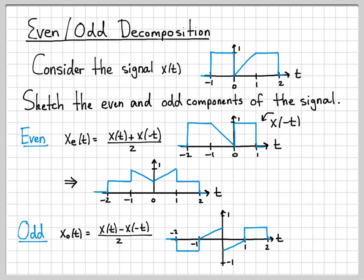And that's just the kind of general strategy you follow for doing these types of problems. Given x(t), sketch the time reversed version. And then piece by piece, do the addition subtraction. And don't forget about the scale factor on the denominator.